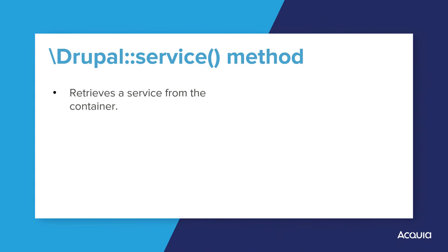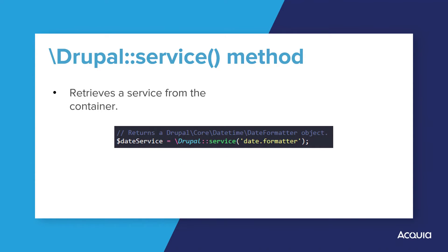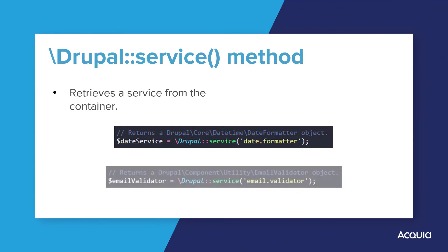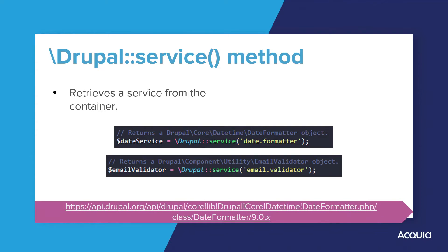You can use the Drupal service method to retrieve any defined service by its name. It is meant to be used for services which do not have a dedicated service method. For example, let's access the date service using the generic Drupal::service() method. The name of the date service is Date.Formatter, and this code provides a service to handle the various date-related functionality. Likewise, to obtain the email validator service, we again use the generic Drupal::service() method. The argument is the machine name of the service. How to use each specific service and its available methods are detailed in its respective documentation page.